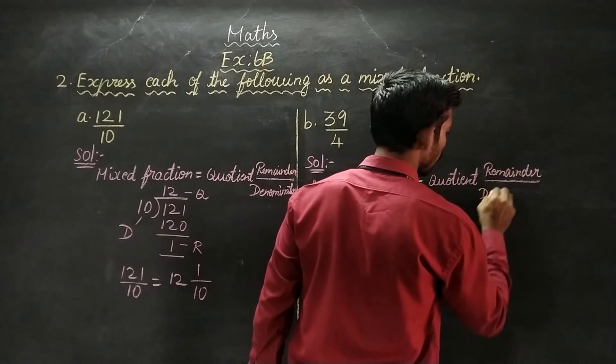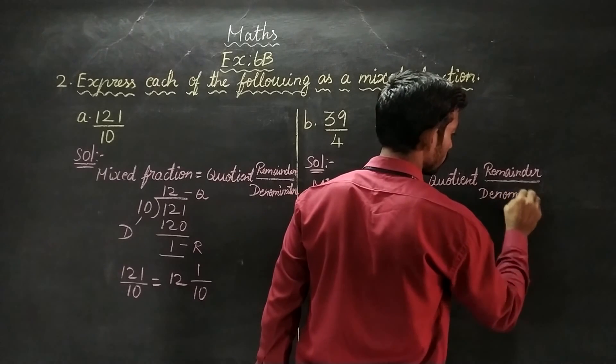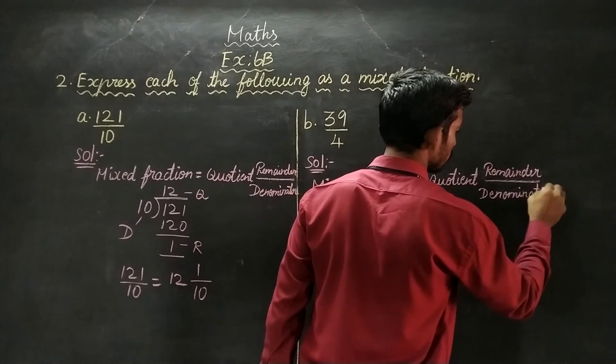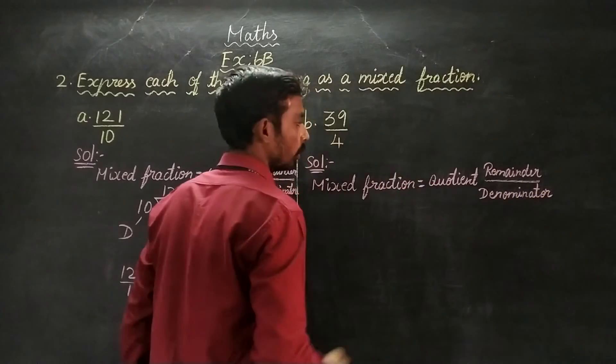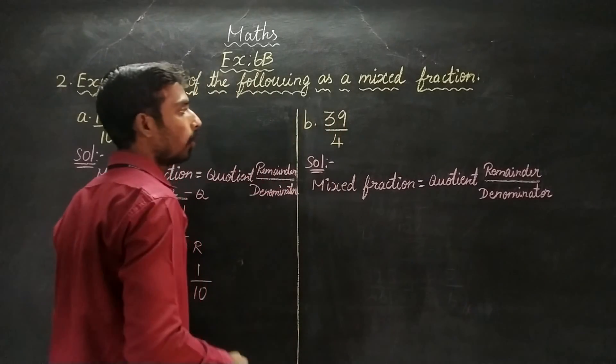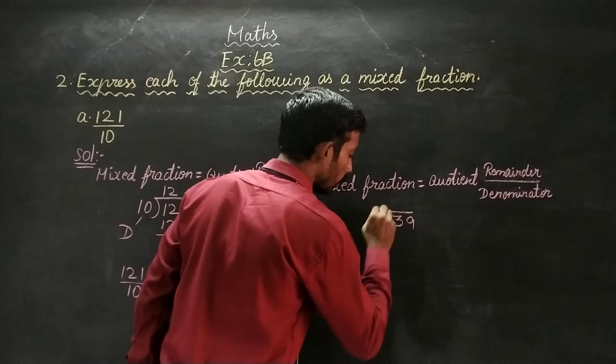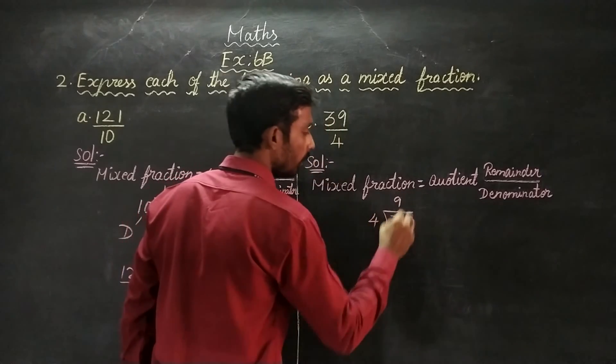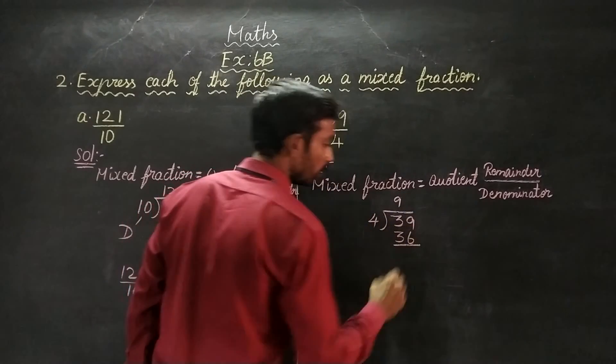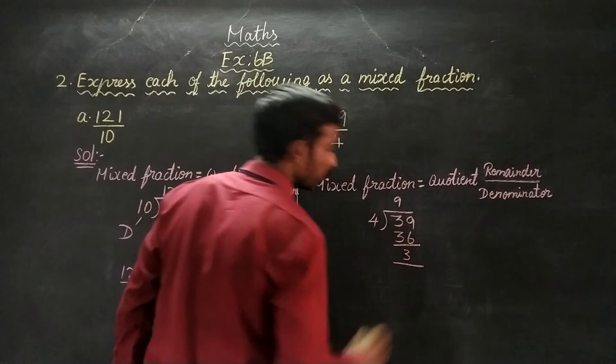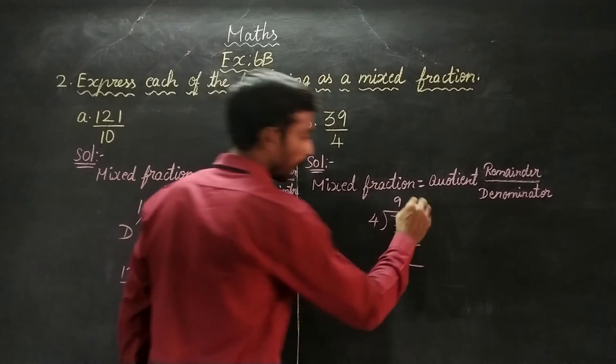Part B, 39 by denominator 4. So it will be 39 divided by 4. 4 goes into 9... 4 times 9 is 36, balance is 3. So it will be quotient, remainder, denominator.